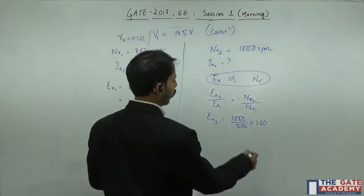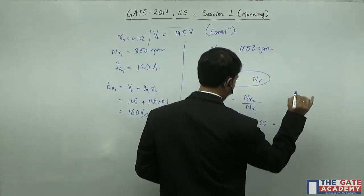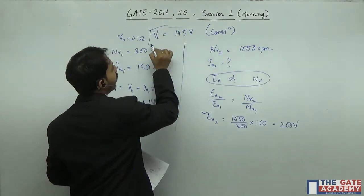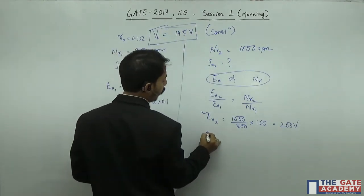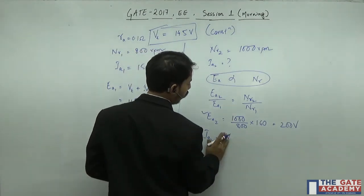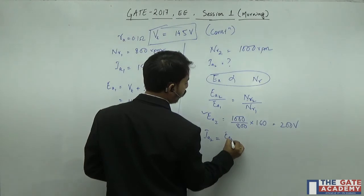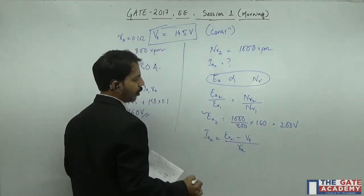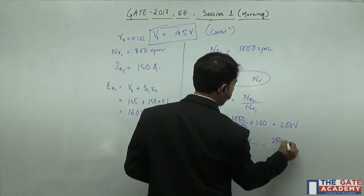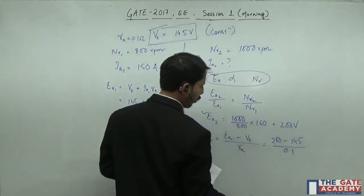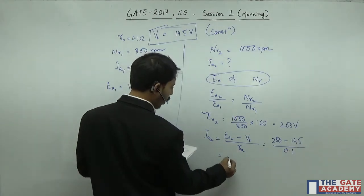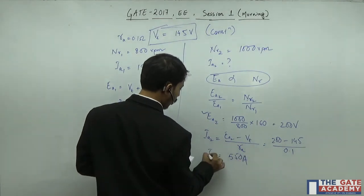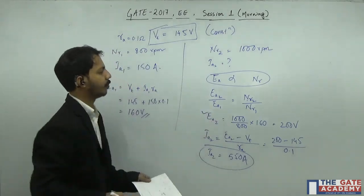Now we know EA2, we know the grid voltage VT. From here we can calculate IA2. IA2 is EA2 minus VT by RA, which is 200 minus 145 by 0.1. This comes out to be 550 amperes. So this is the answer.